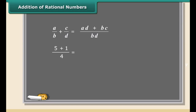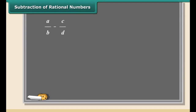Here is an example of addition. We will add five by four and one by four. See, the denominators are already the same. Now add the numerators and put the answer over the same denominator. This fraction can be further simplified to three by two.